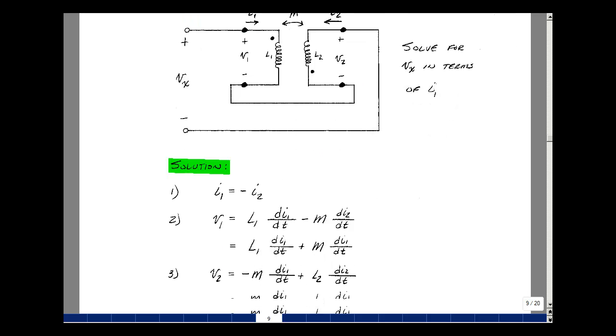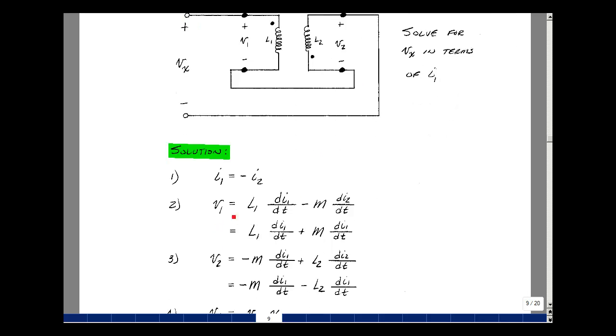Let's take our equations for the transformer, which is V1 equals L1 Di1/dt, now minus M Di2/dt, but I2 is equal to minus I1, so we can just replace that by minus I1, bring the minus sign over here, and I've got my first constraint on V1.